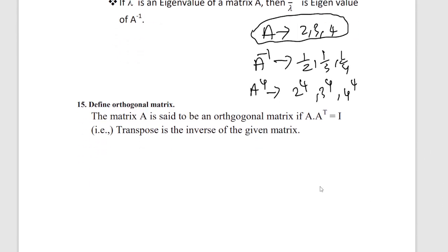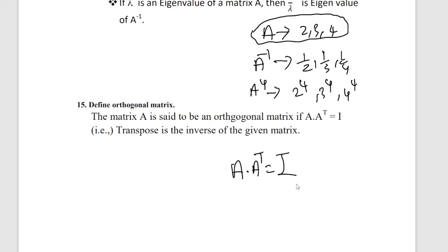Orthogonal matrix: if A transpose times A equals the identity matrix, that is called an orthogonal matrix. In other words, the transpose of A is the inverse of A. Based on this definition, 5-mark problems on orthogonal matrices can be solved.